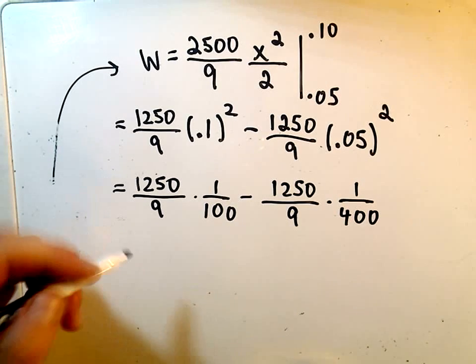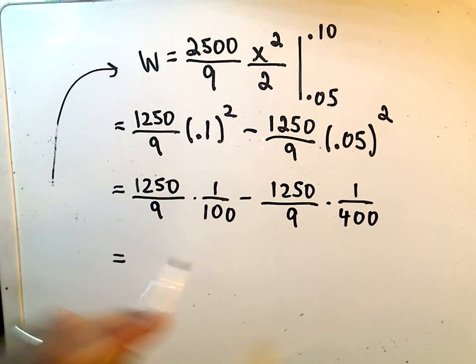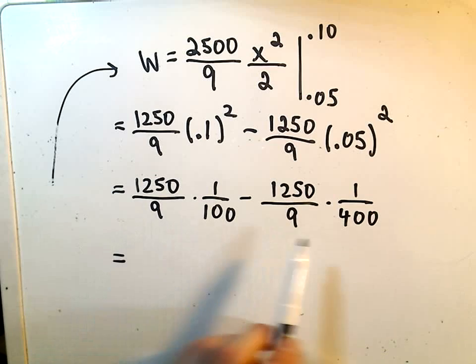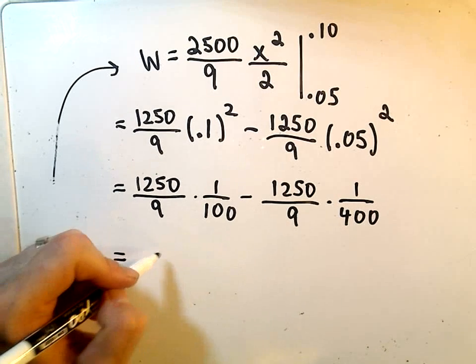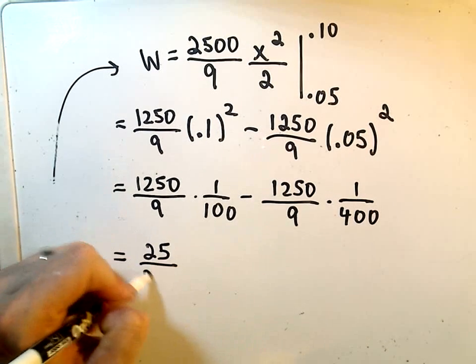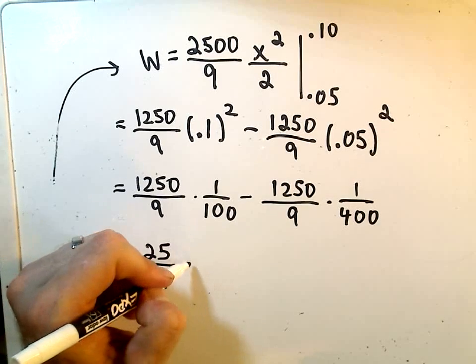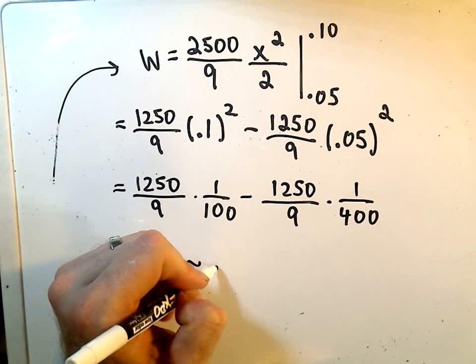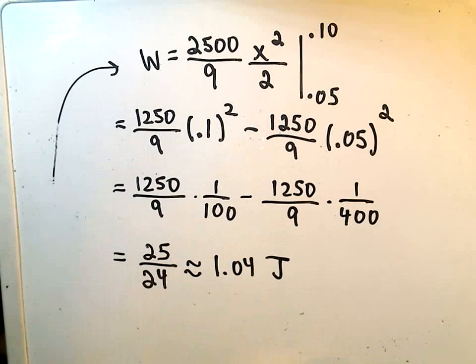You can get common denominators and do all this here. If you do get common denominators and subtract and simplify, we get the value 25 over 24, which is going to be roughly equal to 1.04 joules.